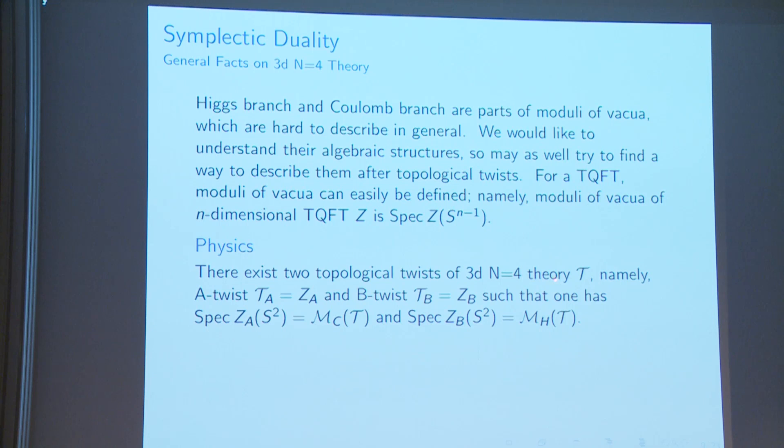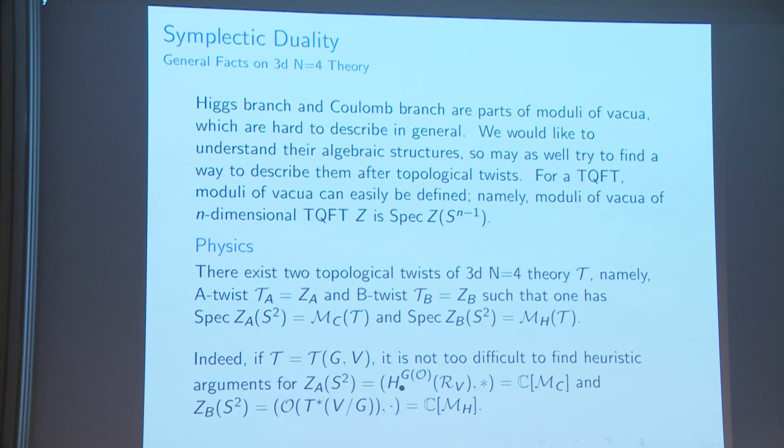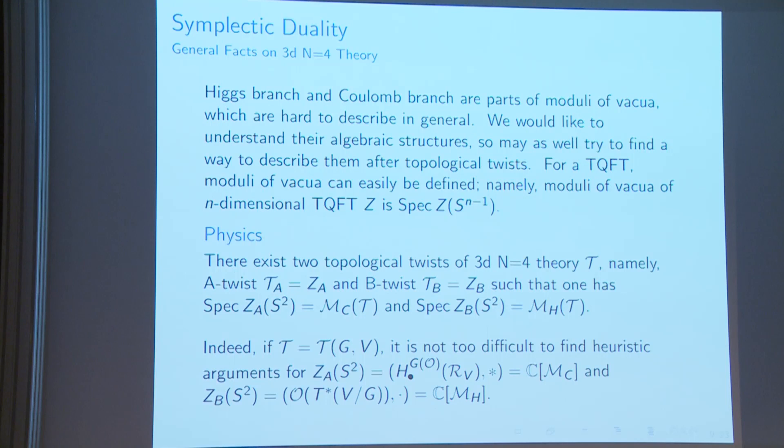The 3D N=4 theory has two twists — A-twist and B-twist — such that if you compute the moduli of vacua following this description, the A-twist gives the Coulomb branch and the B-twist gives the Higgs branch. We can argue following this physics expectation and see the Coulomb and Higgs branches.